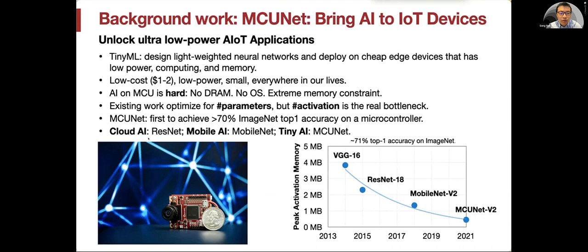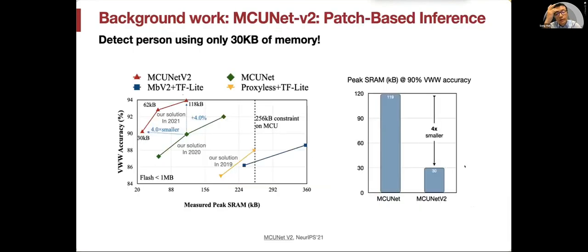For cloud AI, people use ResNet. For mobile AI, we have MobileNet. For Tiny AI, we have MCU net. Last year, we proposed the second version of MCU net, which is a patch-based inference method that can run visual wake words within only 30 kilobytes of memory. Throughout the years, we've been pushing the frontier for this memory and accuracy trade-off, improving memory consumption by about six times within the past three years.